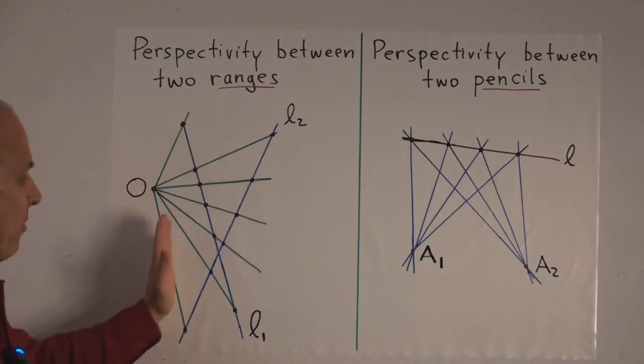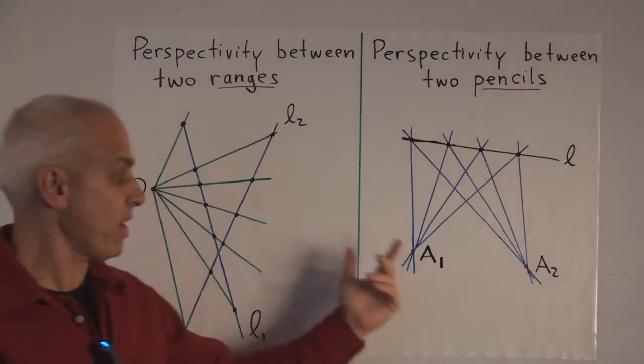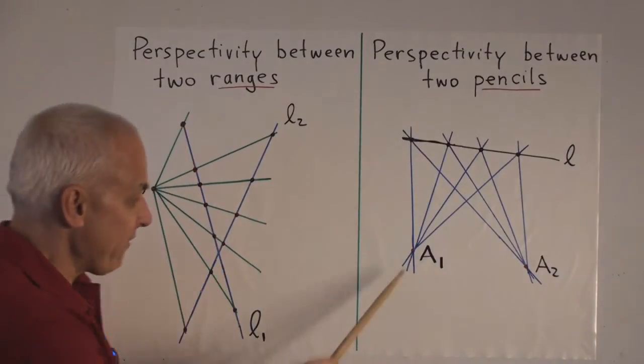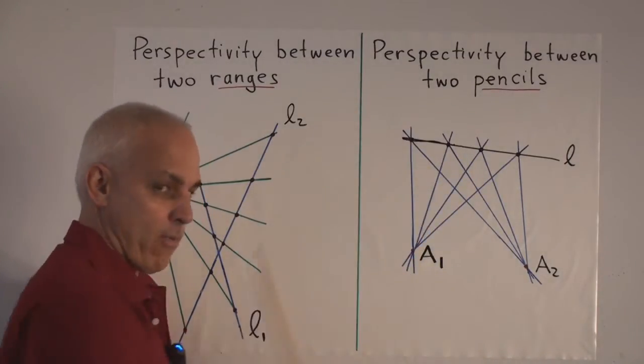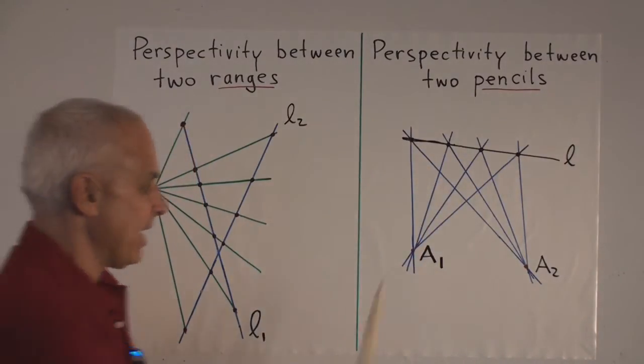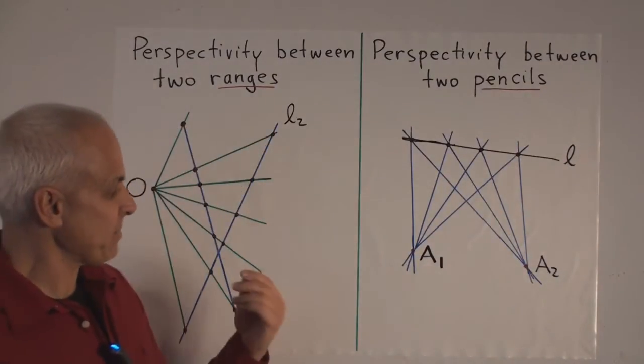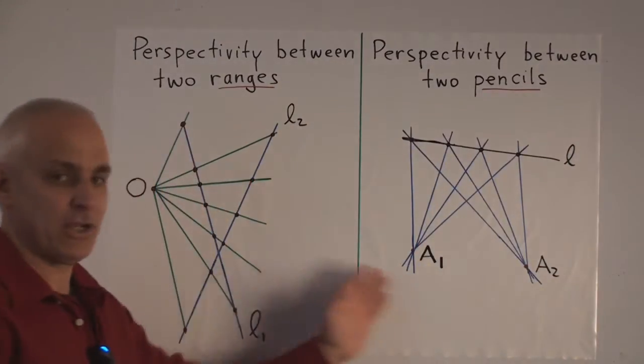Now, it turns out that there's a complete duality between this kind of perspectivity and quite a different perspectivity between pencils. So if we have a point A1, then we talk about the pencil of lines through A1, all the lines through A1. And here's the pencil of lines through A2.